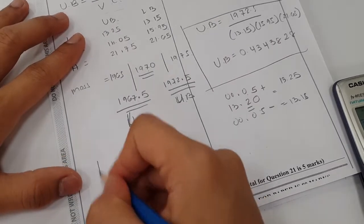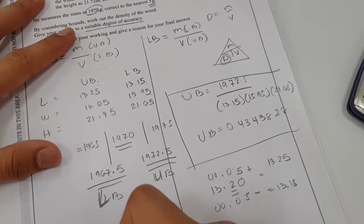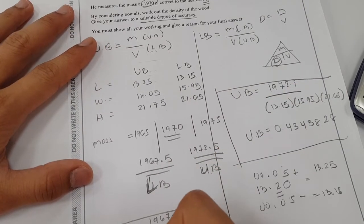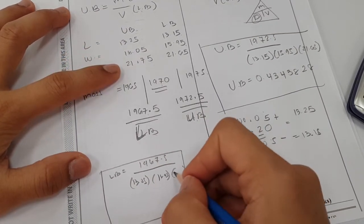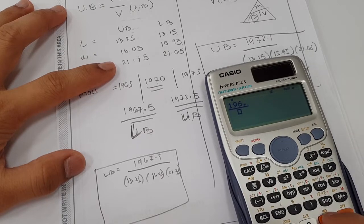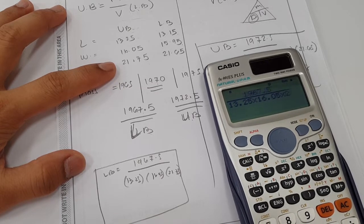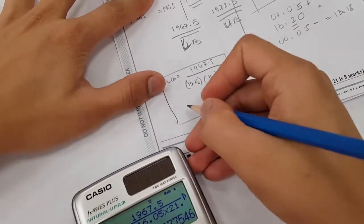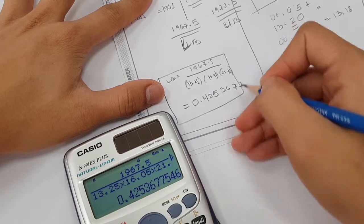I'm going to do now the lower bound. In order to get the lower bound, I just have to get the mass in lower bound. The lower bound of the mass is 1967.5 divided by all the upper bounds, which is 13.25, 16.05, and 21.75. Using calculator, which gave me an answer. I'll just write it here: 0.4253677.